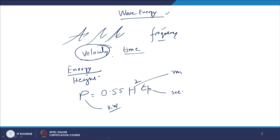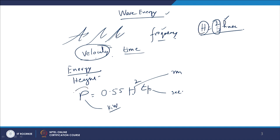Wave height is another issue because it keeps changing with time, so we need to decide which height to use for H. H is normally taken as two-thirds of the maximum wave height. If we capture an image of the wave, two-thirds of the wave height is considered as the nominal height to be used when calculating wave power using this equation.